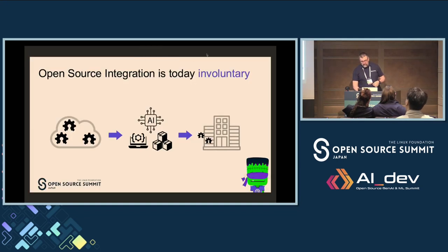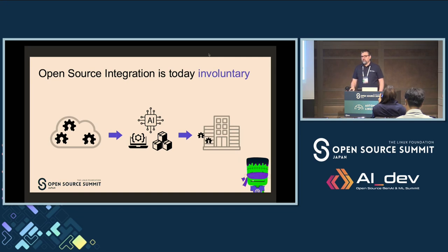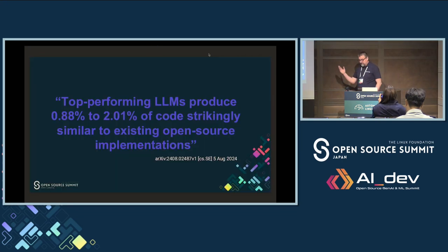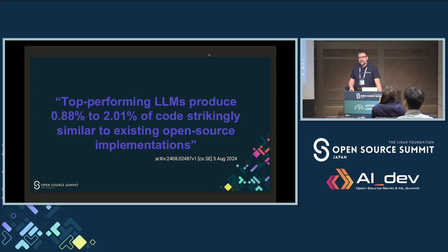Today, integrating open source is an involuntary process with latest technologies — AI-assisted tools, package managers, and latest IDEs. The process of bringing open source into the company code is involuntary and invisible. This is a big problem. A recent paper published by a university in the United States says that between 0.88 and 2.01% of the code generated by AI is strikingly similar to existing open source. And who is not using AI today?